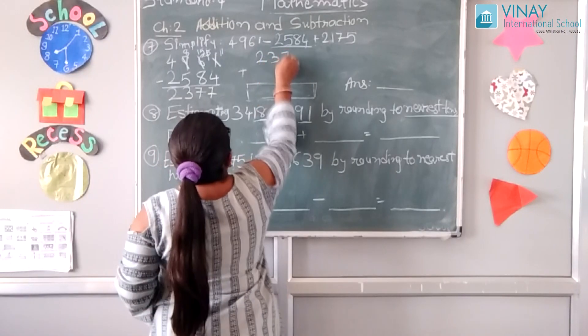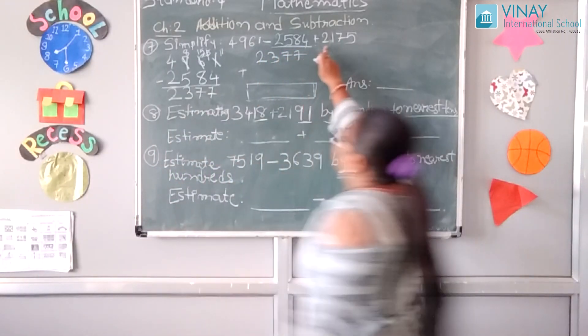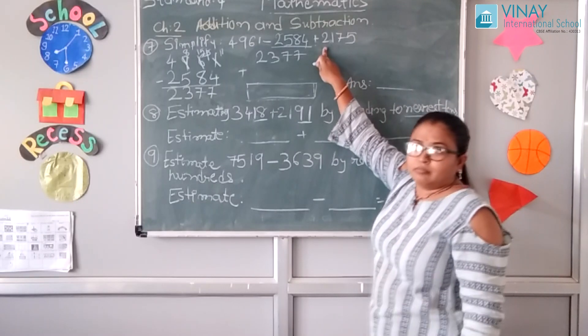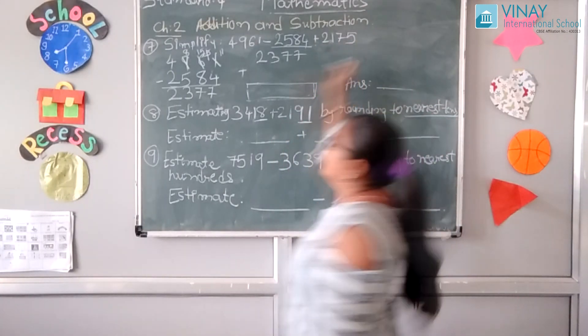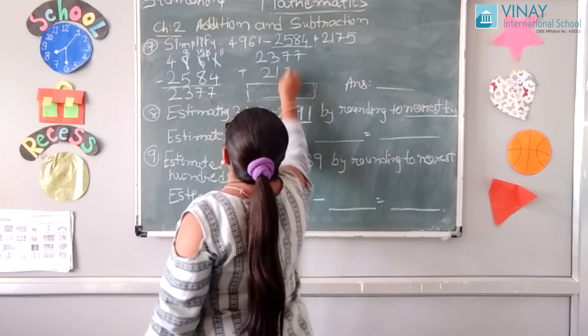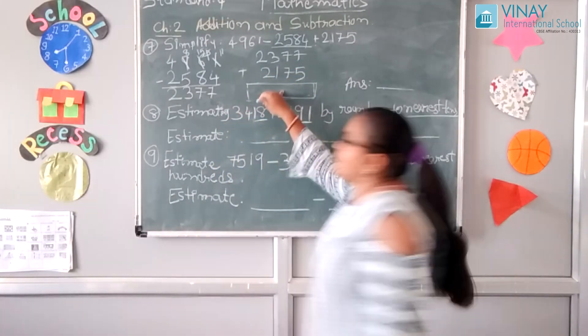Now we have difference 2377. We have the question, what we need to add is 2175. Let's add and find the final answer.